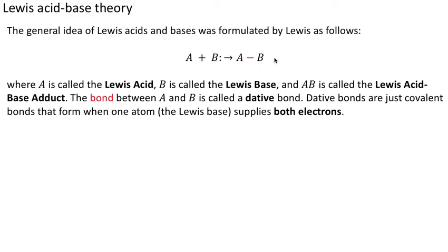This forms a resulting molecule called an adduct, or a Lewis acid-base adduct—that's what AB is. The bond between them is called a dative bond, which is basically a covalent bond.